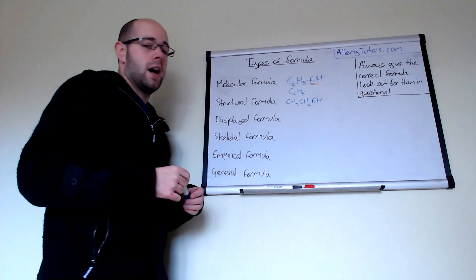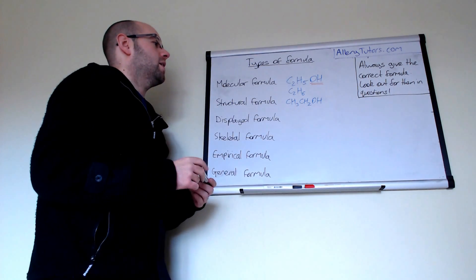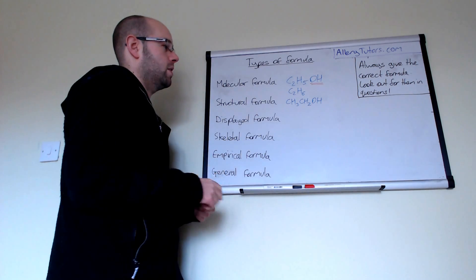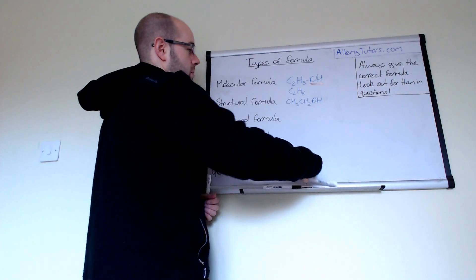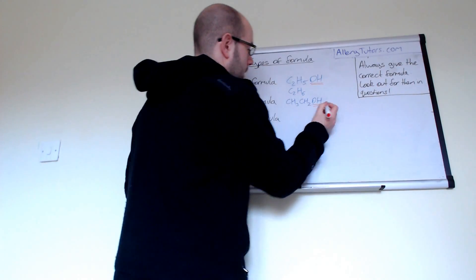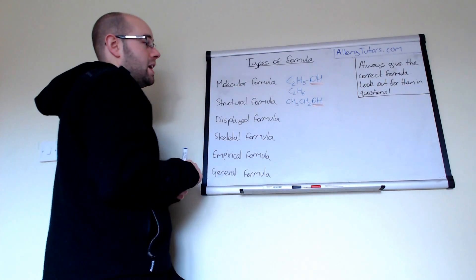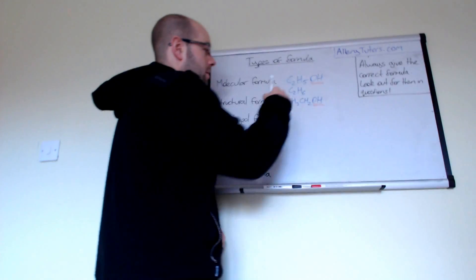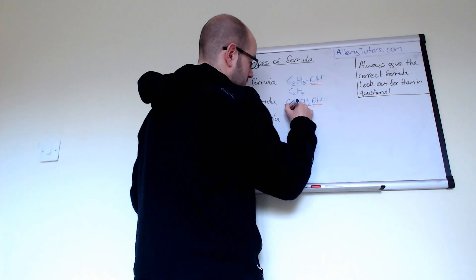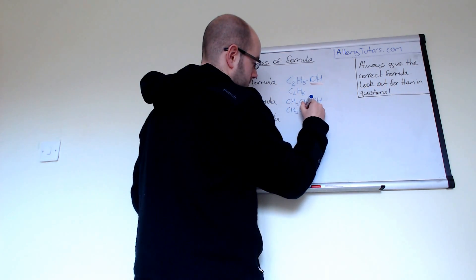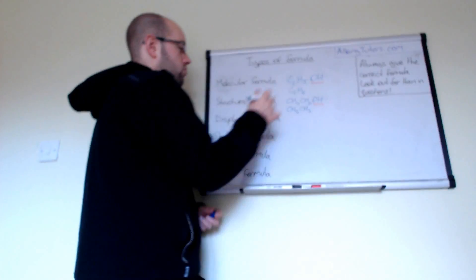You can see what we've done is we've broken it up into CH chunks and it just allows us to see our structure a little bit better. We can see we've got our functional group on there and if it was something like ethane which is this one here then that would just be CH3CH3.